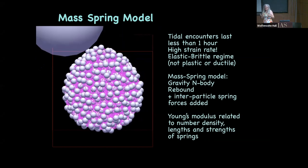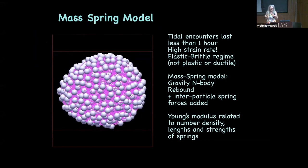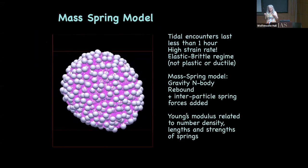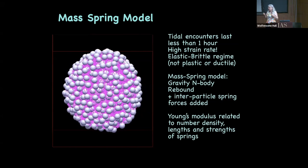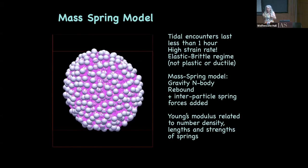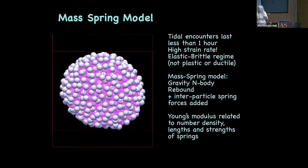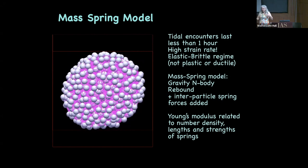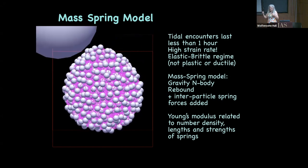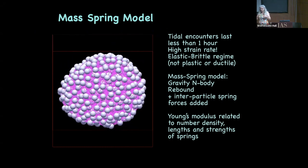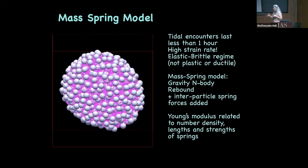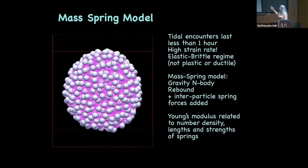He had measured the Young's modulus and the Poisson ratio for the random mass-spring model and predicted them in the continuum limit, assuming a linear stress-strain relation. So that was helpful — we tried this. What is actually shown here is an N-body simulation, but these are point masses — they look like spheres but they're actually points — and they're connected by little springs.